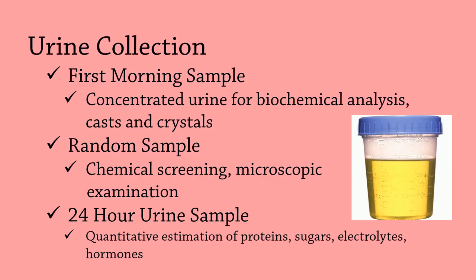How is urine collected? Urine is usually collected in a sterile, wide-mouth container. There are different forms and methods of urine collection: it can be a first morning sample, a random sample, or a 24-hour urine sample.